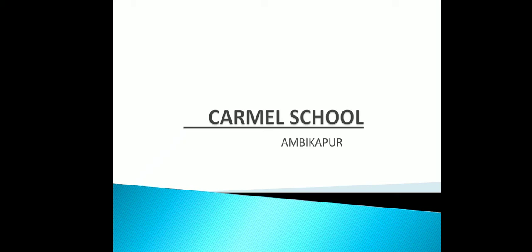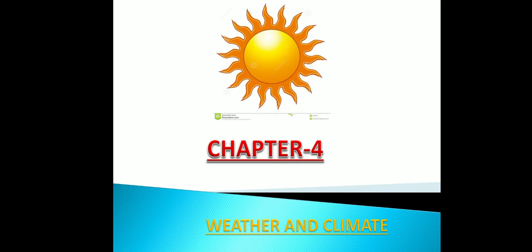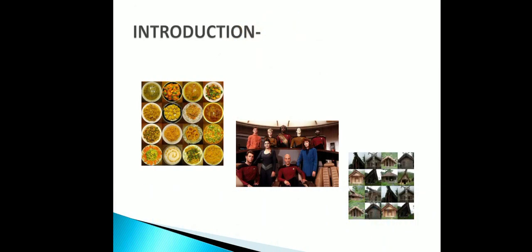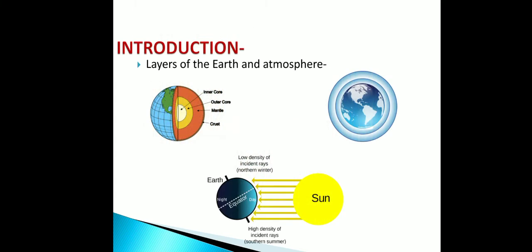Hello students, welcome to online class. Today we are going to study Chapter 4: Weather and Climate. In the beginning of the chapter you can see pictures of food, dress, and house — these are all affected due to weather and climate. In the introduction, we can see the first picture showing the layers of the Earth.